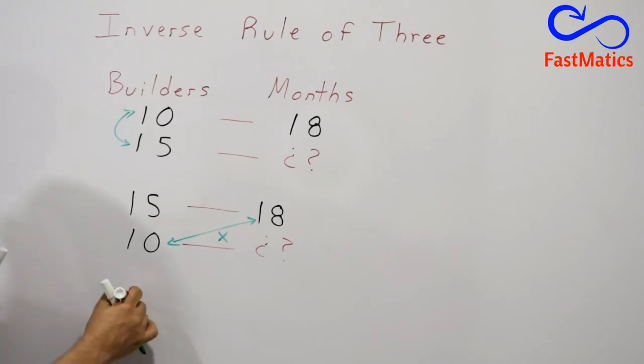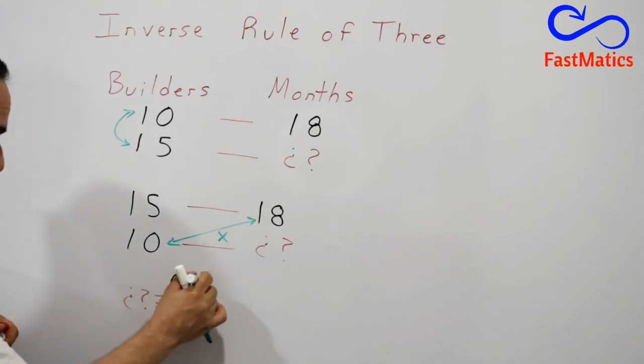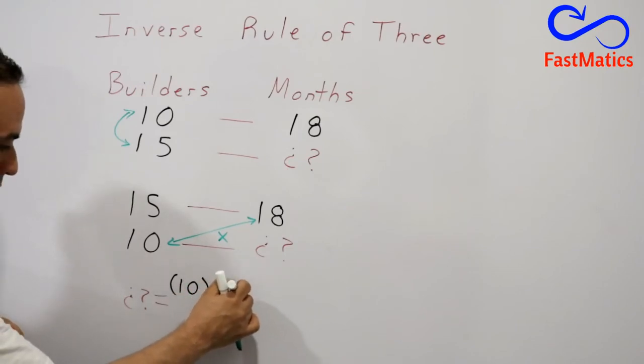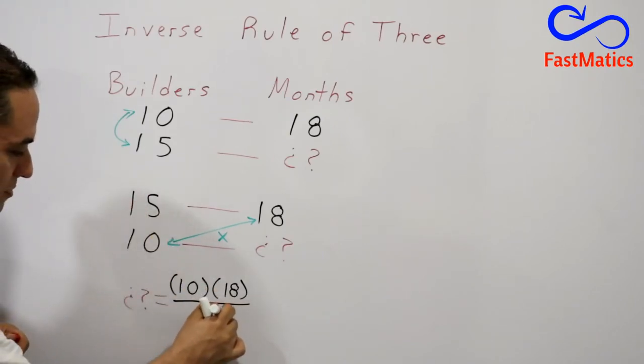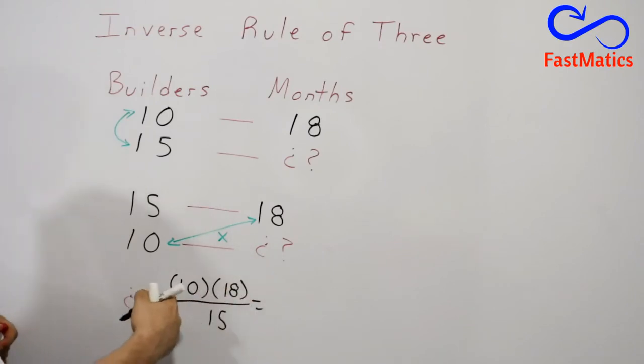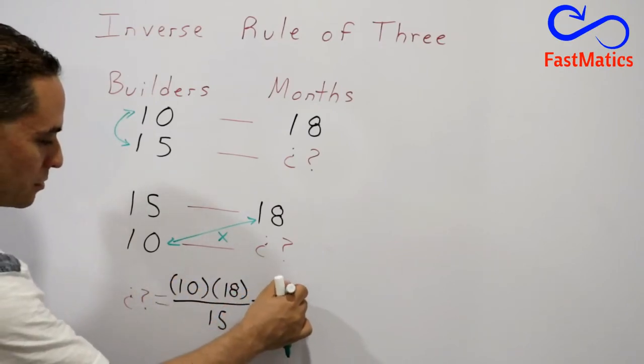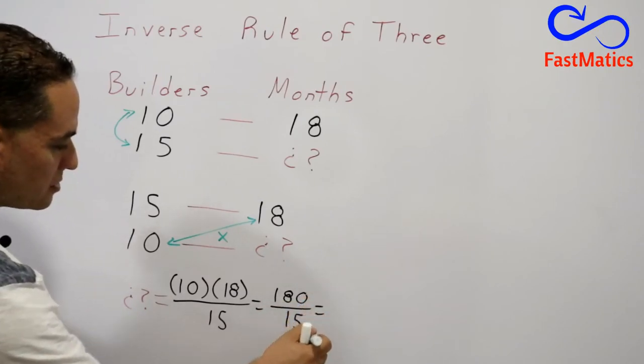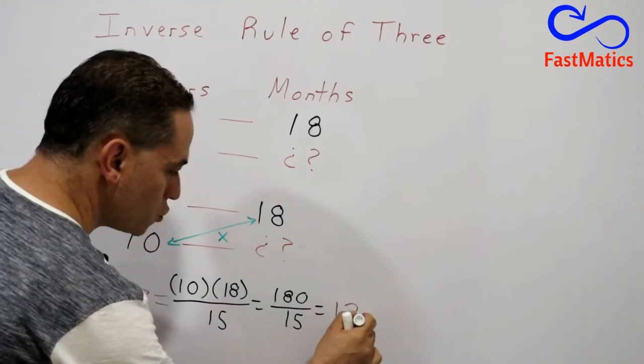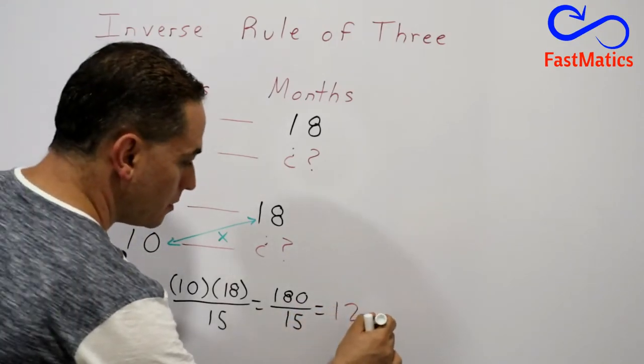Then I write the unknown is going to be equal to 10 times 18. Remember that when you write parenthesis it is a multiplication divided by 15. Then 10 times 18, 180 divided by 15. And the final answer is 12 months.